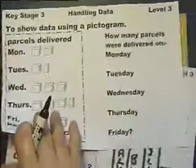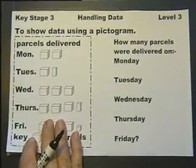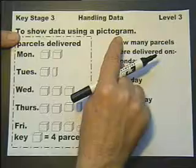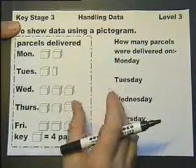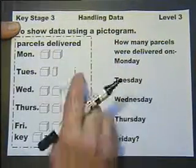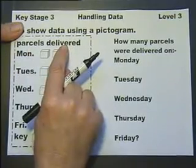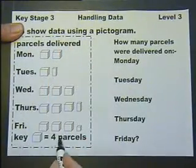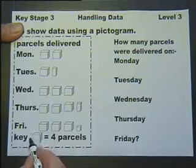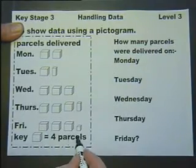You should also be able to understand pictograms — showing data using a pictogram. You either have to draw the pictogram or read it. Here's a pictogram about the number of parcels being delivered. It needs a key, and the key shows that each diagram of a parcel represents four parcels.